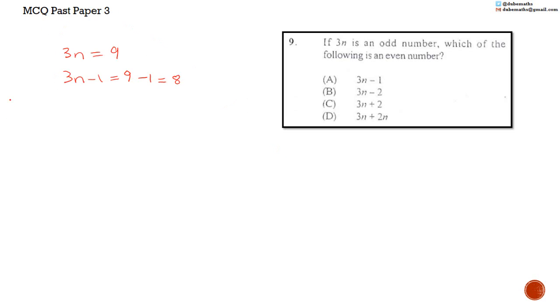On the other hand, if 3N was equal to 99, then 3N minus 1 would be equal to 99 minus 1, which is equal to 98. I used two examples here, but you can use as many examples as you are comfortable with. We see the trend. We got 8 and we got 98 and both are even. So this answer seems correct. But let's make sure that the other answers are wrong.